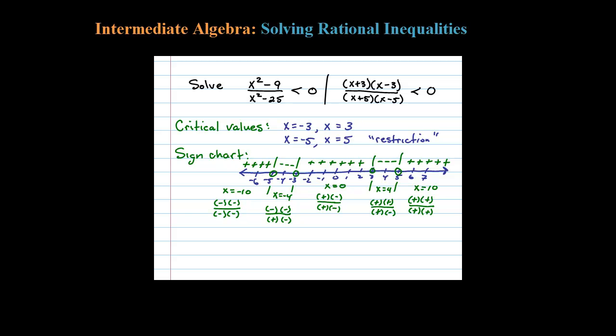Okay, so this is our sign chart. Now the last step is to answer the question. We're going to use this sign chart to determine where this rational expression is less than 0. Less than 0 means negative.